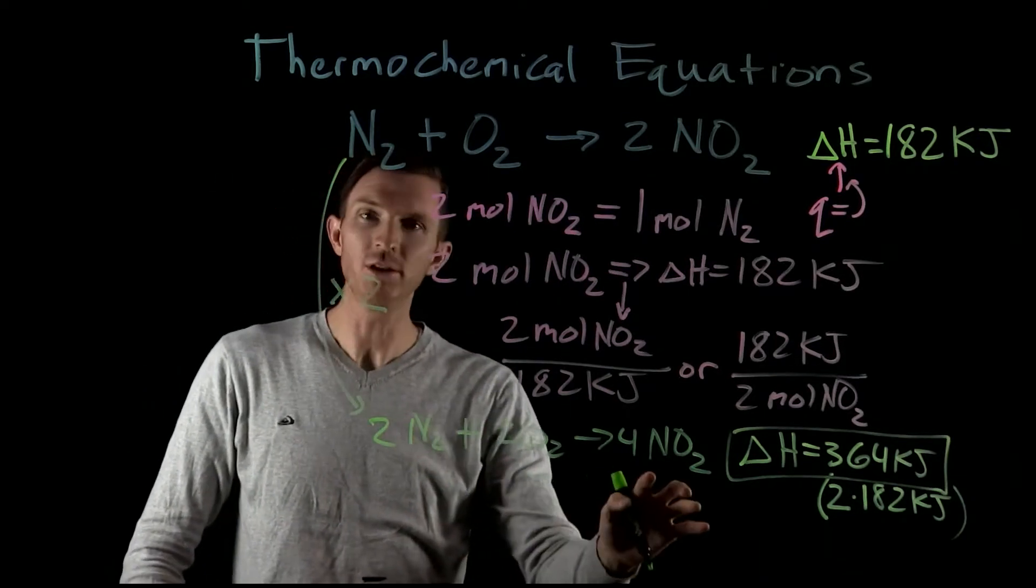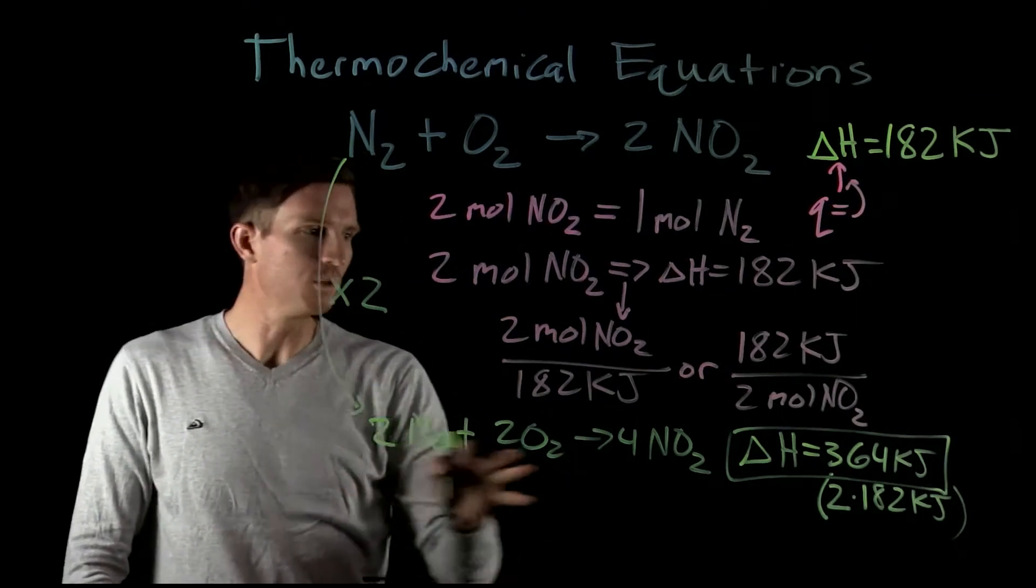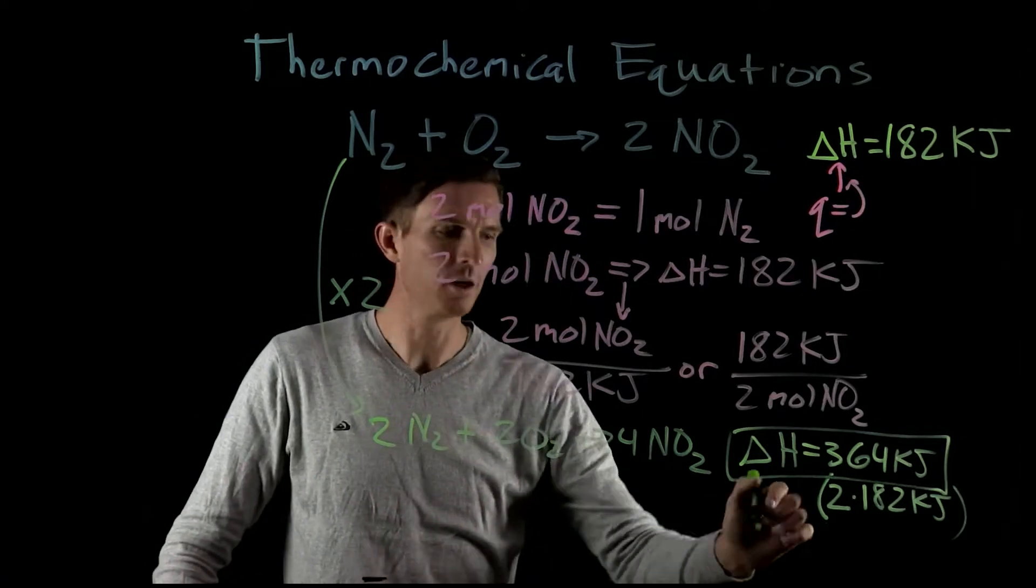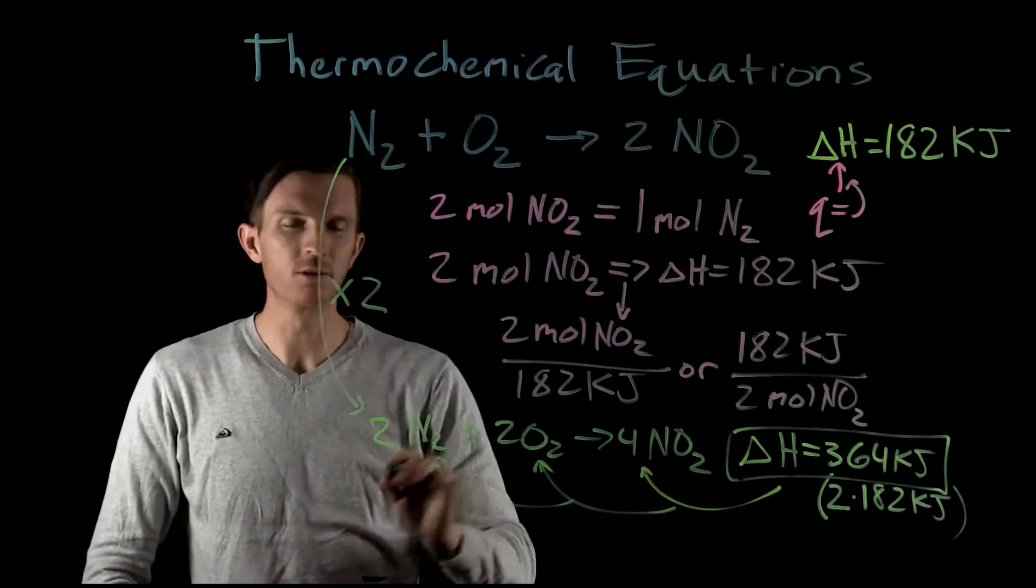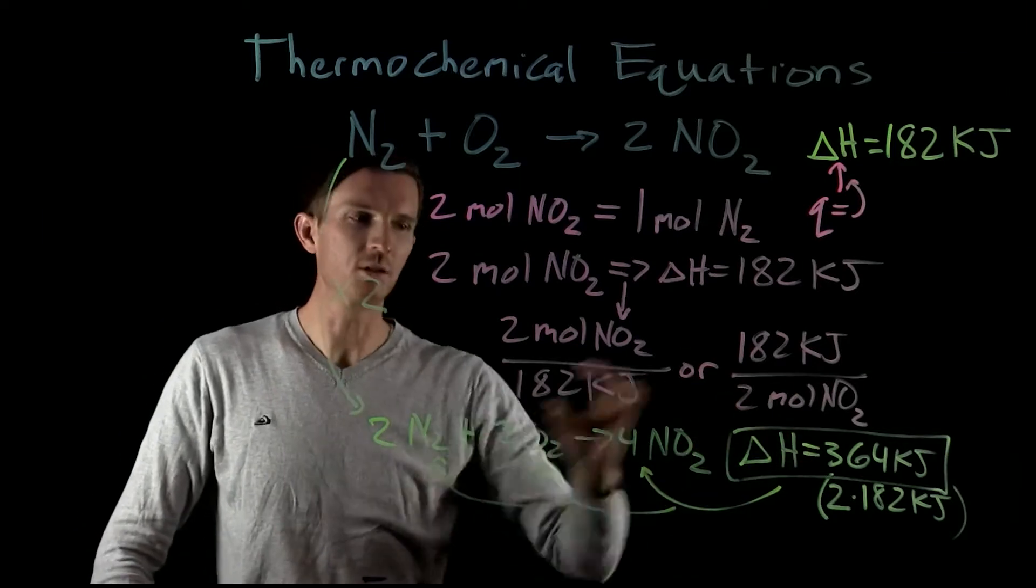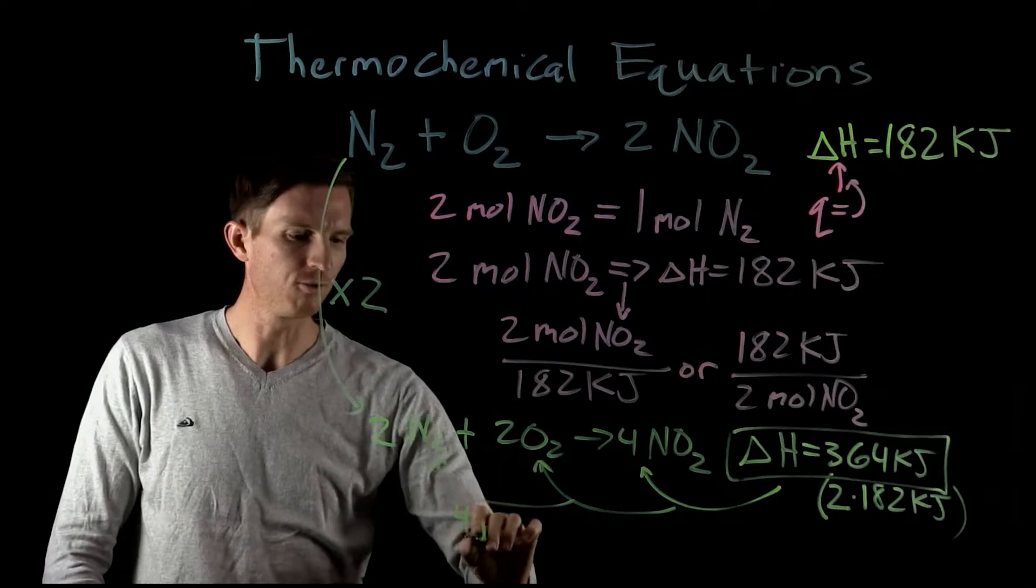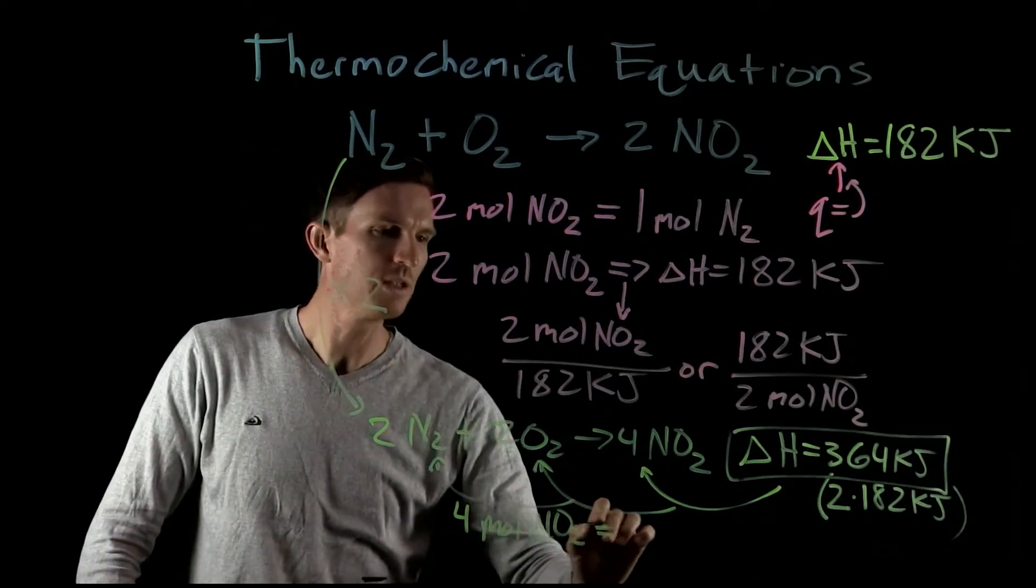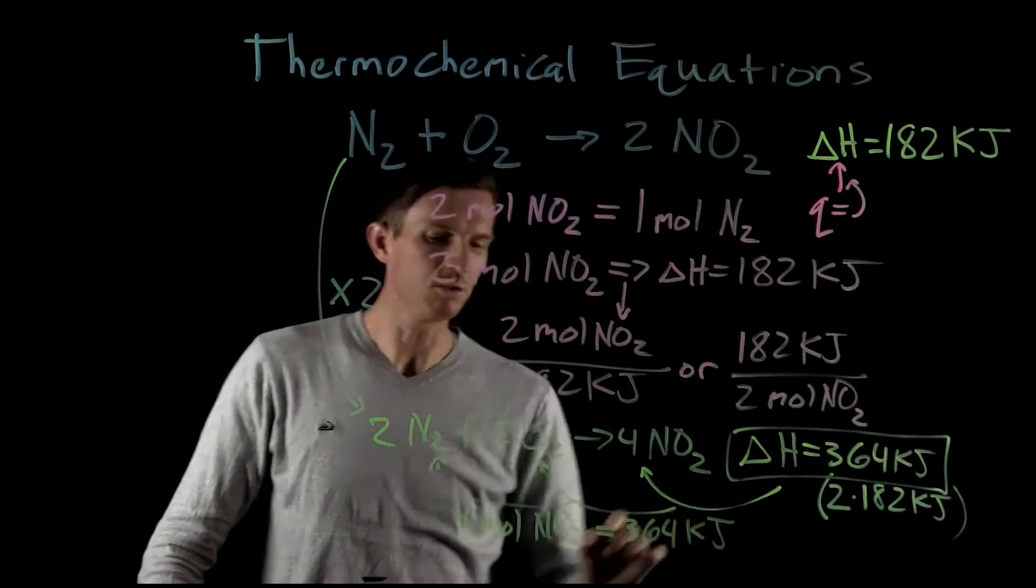So we change the coefficients, we multiply all of them by 2, by 3, divide them by 2, divide them by 3, we would do the same to our enthalpy. So we see our enthalpy change recorded here in our thermochemical equation corresponds to the amount that we're actually reacting here. And we would see the ratios are still the same. So now if we go back to our original ratio, looking at this equation, we could say it's 4 moles of NO2 equates to an enthalpy change of 364 kilojoules.